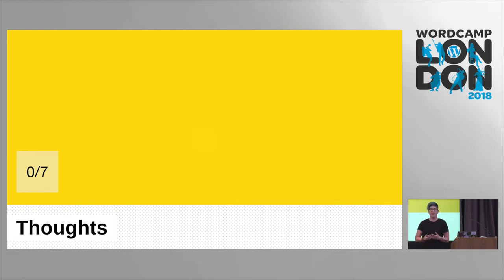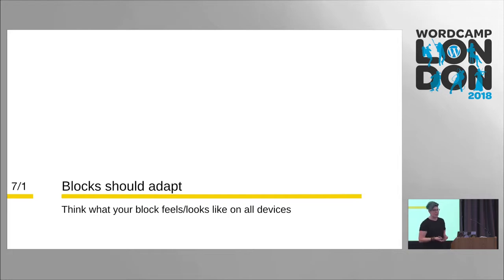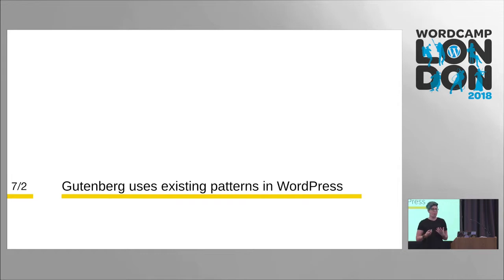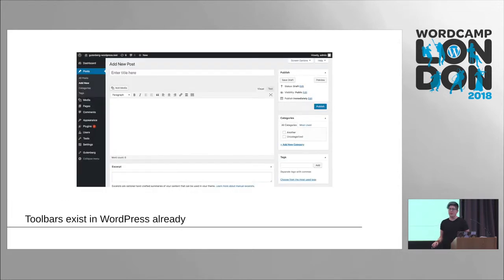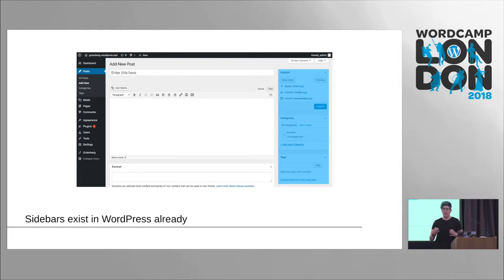I'd like to share some thoughts based on things I've heard people say about Gutenberg and specifically about blocks. Blocks should adapt to different devices — make sure your block feels and looks right on that device, and test on those different devices. Gutenberg uses existing patterns in WordPress — there are some new things, but the foundations of Gutenberg stand on the foundations of WordPress. Toolbars and sidebars already exist in WordPress, and it's really important to remember that these design patterns are still there.